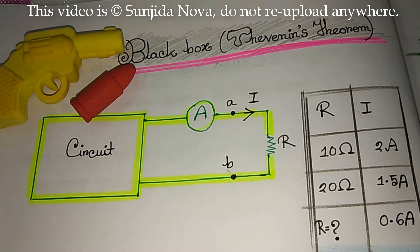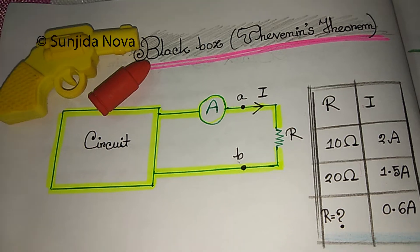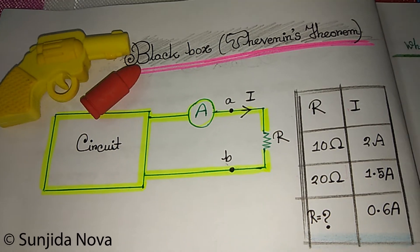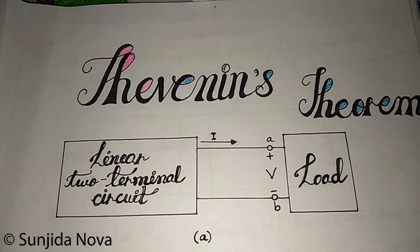We will talk about the black box circuit in this tutorial. The idea of the black box is that a circuit can be replaced by the black box — it will be replaced by the inner circuit inside a black box with two terminals.